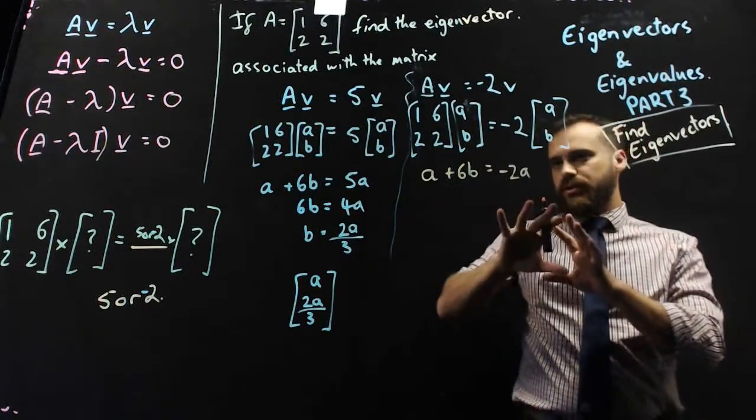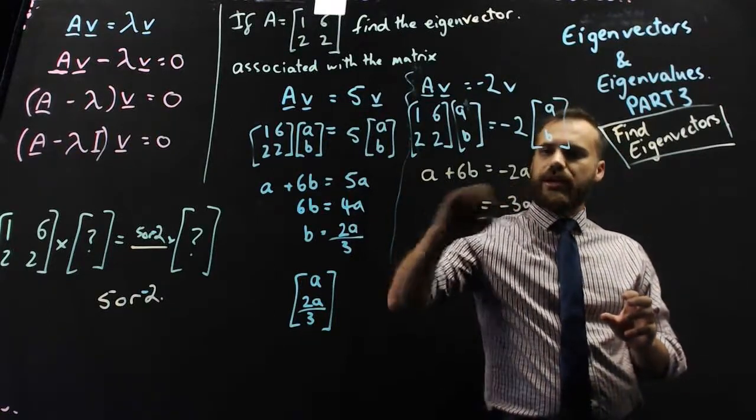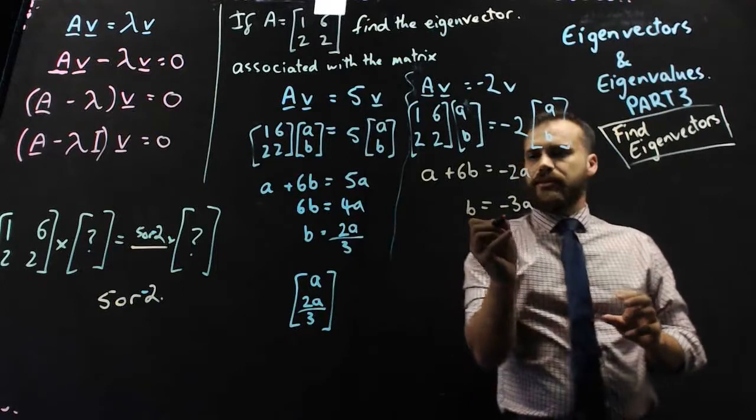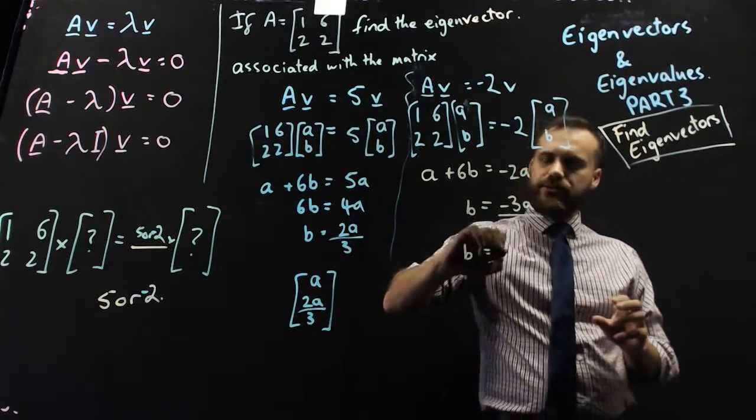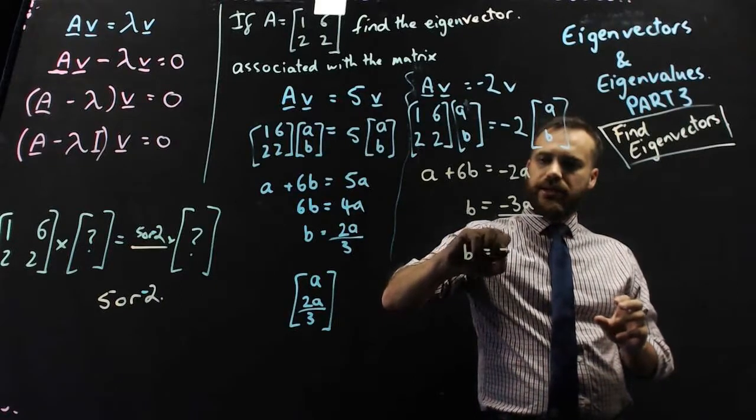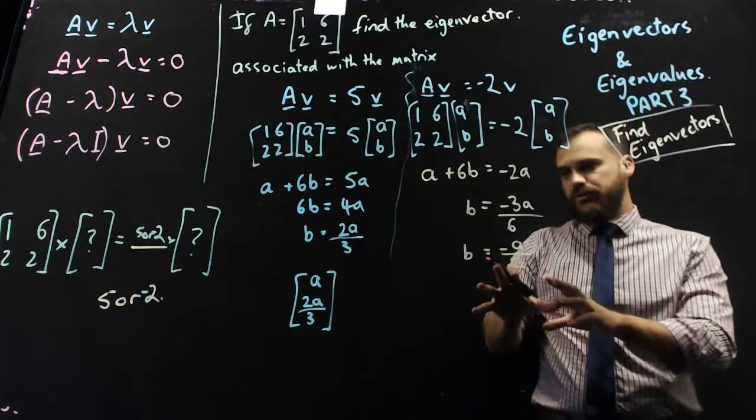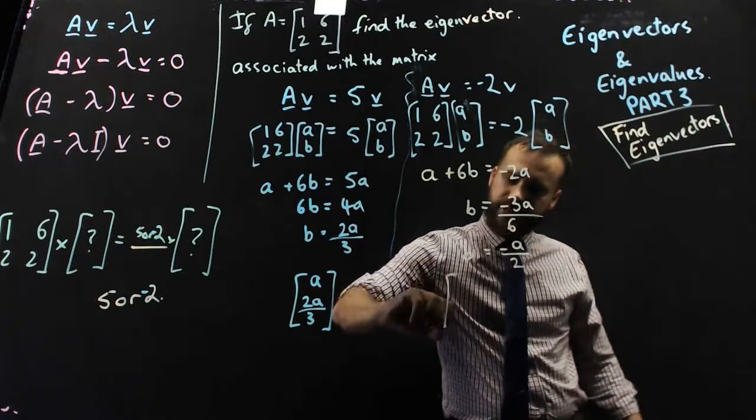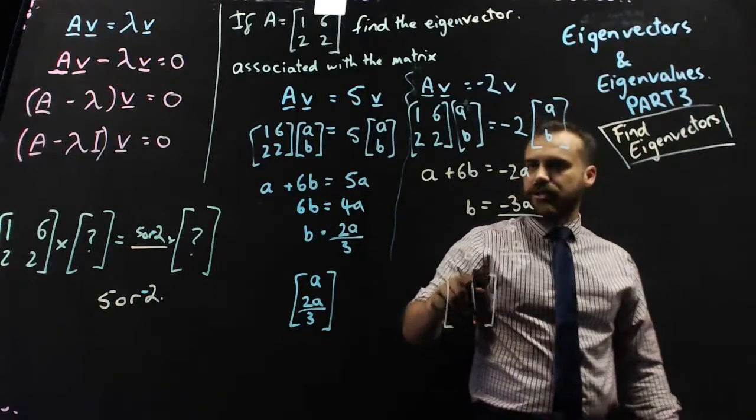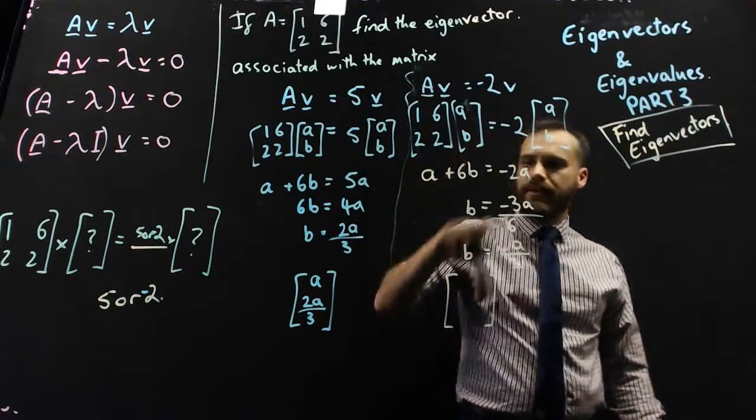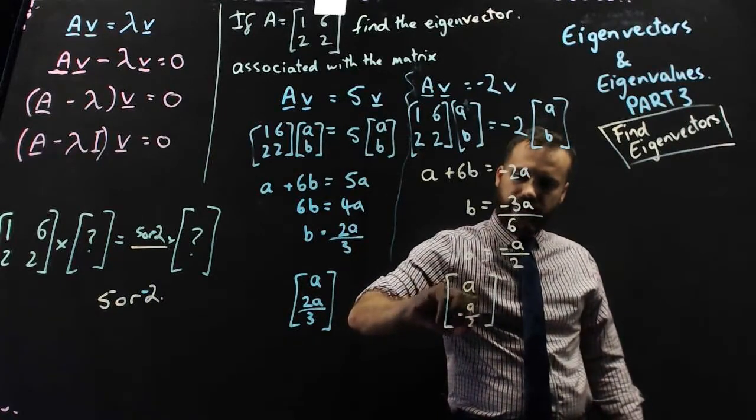And then we can rearrange this in terms of b, so that'll be negative 3ab all over 6. We can just rewrite that as b equals negative a over 2. Now we've got another relationship for b, so we can finish this by saying that our eigenvector would be a, negative a over 2.